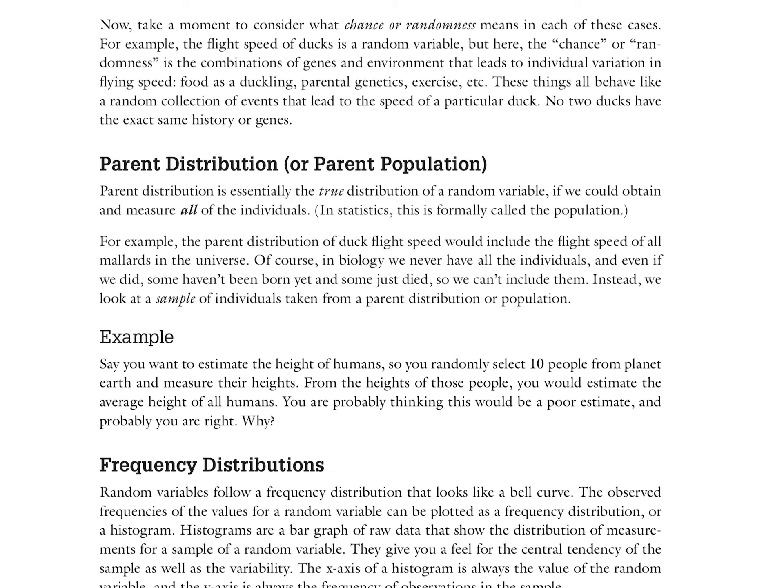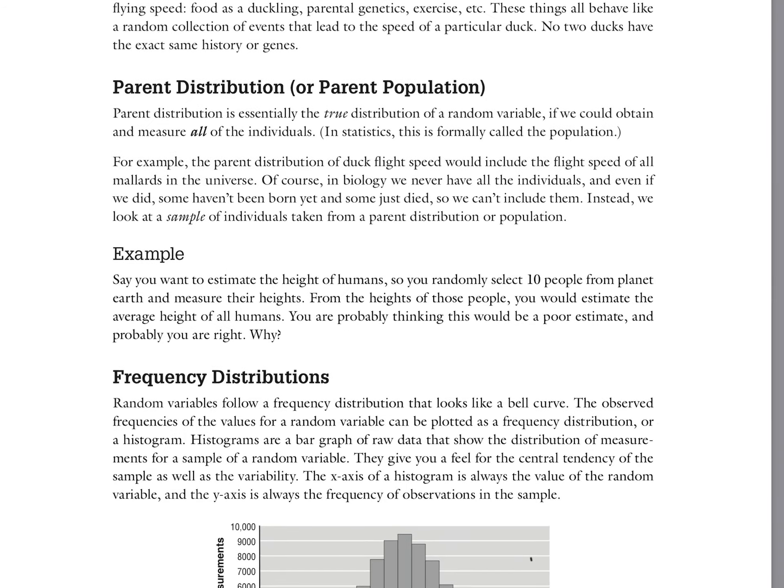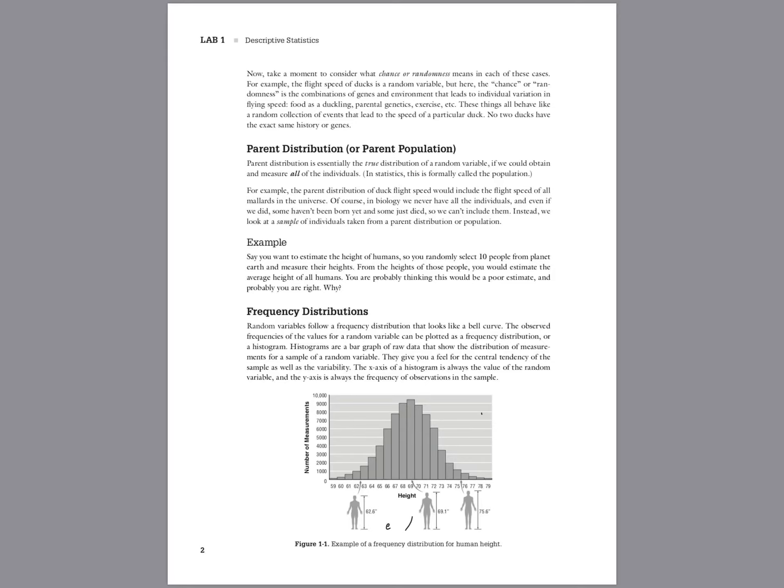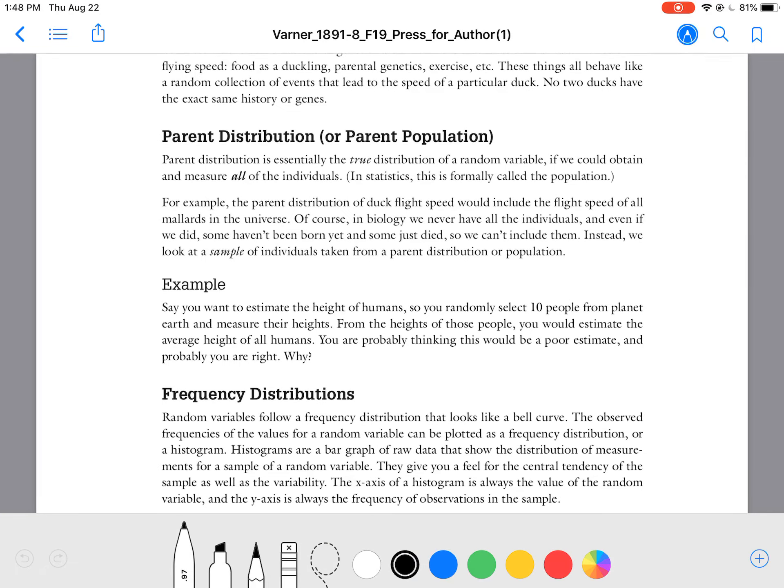So I want to be specific about this concept that we call a parent distribution. The parent distribution is an important concept in this class because it's a term that I'm using to describe what is called in statistics, the population. And in this case, it would be like all the mallard ducks throughout history and in time that are here today and here tomorrow and all on the planet. Every single mallard duck, we put them all into one big measurement. We could have a big graph that shows the random variable of mallard duck flight speed, but it's really not possible to do that, nor practical in most cases.